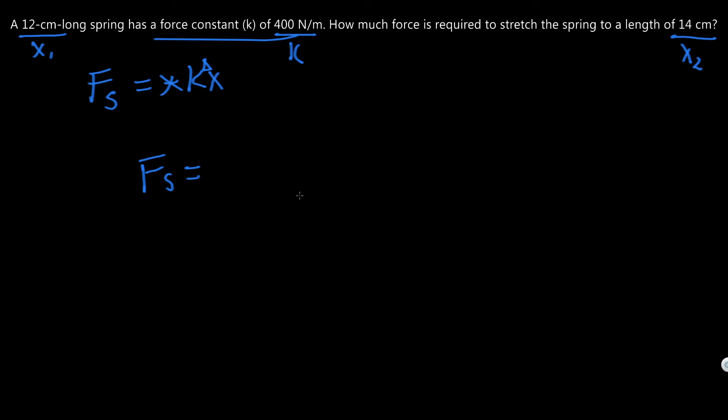They're not asking for negative force. They're essentially just asking for the absolute force. So we just got to plug in the numbers. We got 400 newtons per meter, and delta x, which is just 14 centimeters minus 12 centimeters.